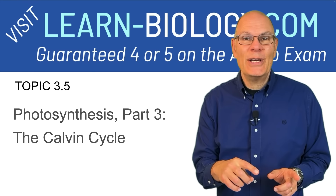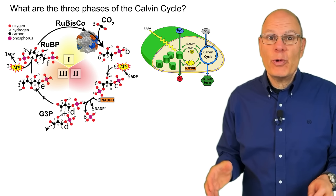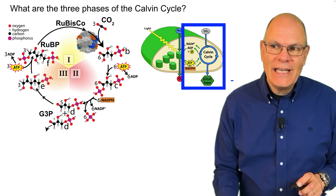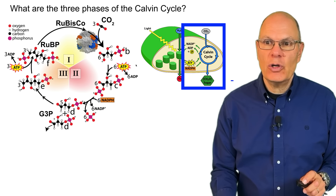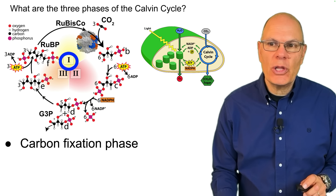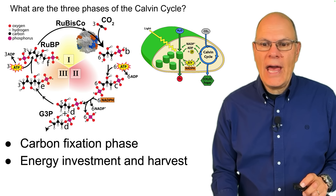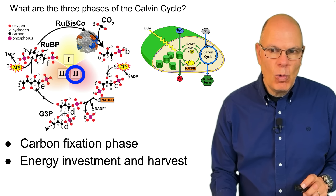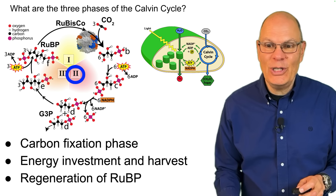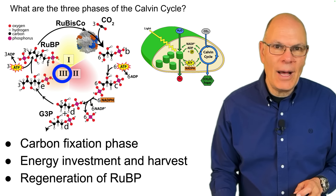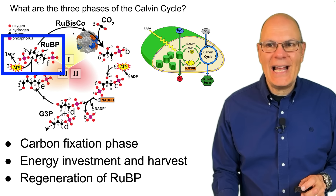Photosynthesis part three: the Calvin cycle. The Calvin cycle takes the products of the light reactions and carbon dioxide and uses them to create sugars. It occurs in three phases. The first is the carbon fixation phase, where carbon dioxide gas is brought into the biosphere. The second is the energy investment and harvest phase, where matter is pulled out to become part of the plant. The third is the regeneration of the starting compound — RUBP, ribulose bisphosphate — making it a cyclical reaction.